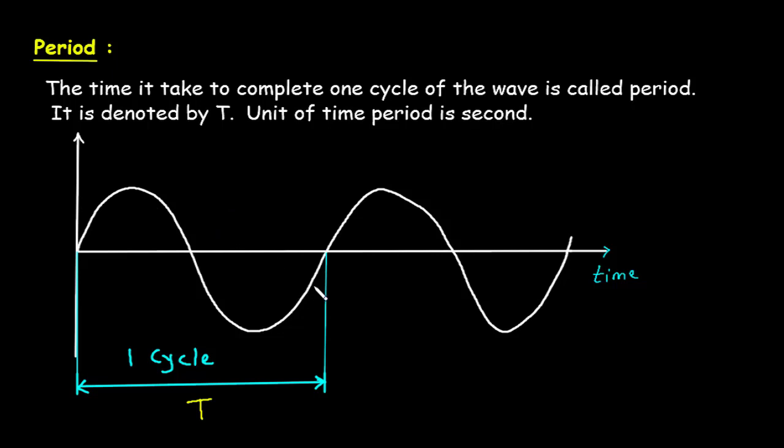As we can see, this is a sine waveform. This positive half cycle and negative half cycle, from here to here, it is called one complete cycle.